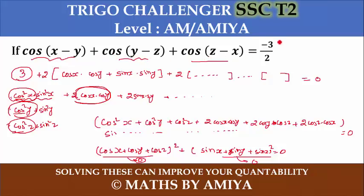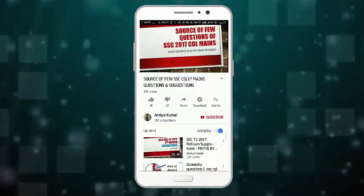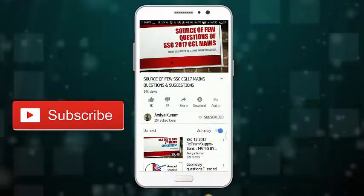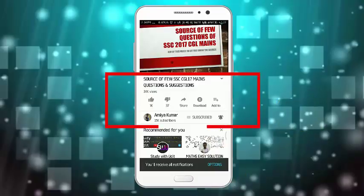If you have cos(x-y) + cos(y-z) + cos(z-x) equal to minus 3 by 2, share this with your friends to understand the concept. Do subscribe to our channel and hit the bell icon to never miss out any update.